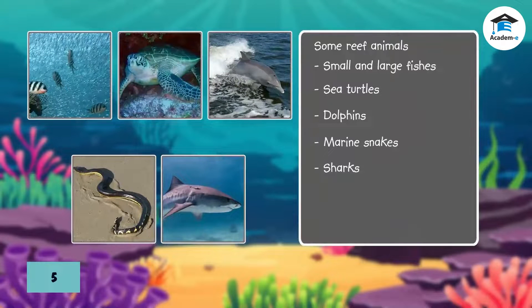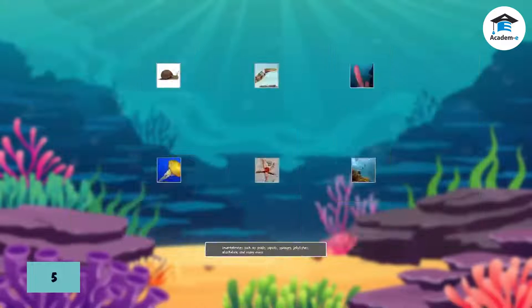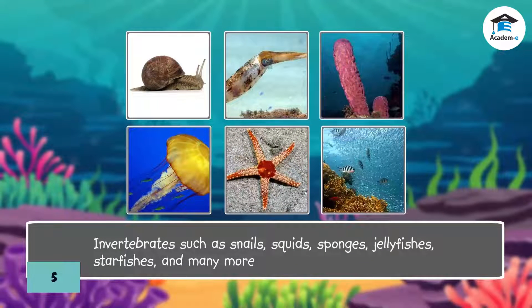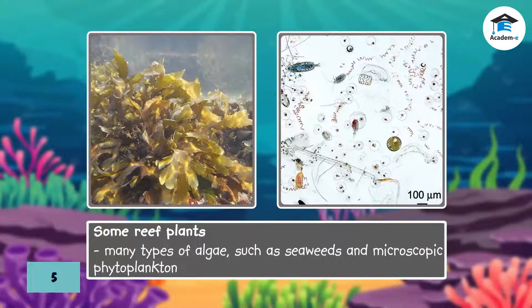Marine animals in coral reefs include small and large fishes, sea turtles, dolphins, marine snakes, and sharks. Invertebrates such as snails, squids, sponges, jellyfishes, starfishes, and many more. Many of these animals depend on coral reef plants for food.